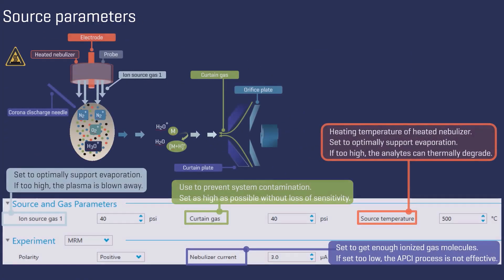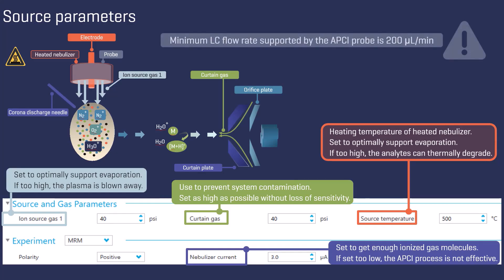It is essential to optimize the source parameters when using atmospheric pressure chemical ionization. Note that the minimum flow rate supported by the APCI probe is 200 microlitres per minute.